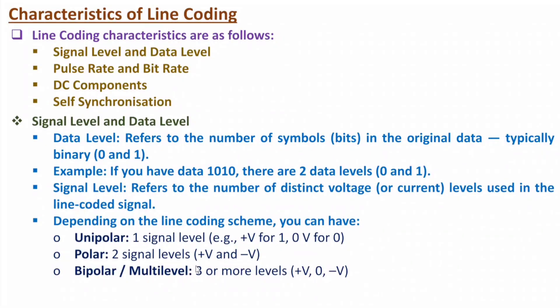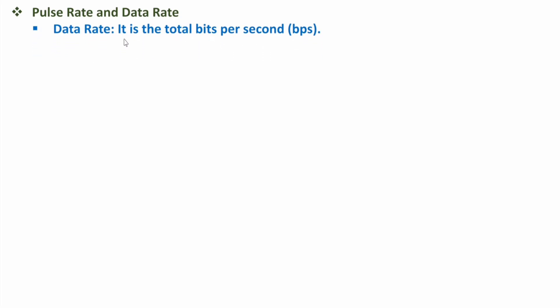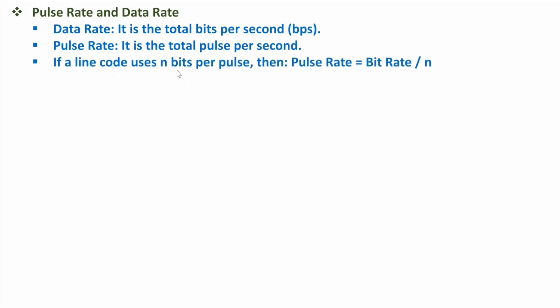The second characteristic is pulse rate and data rate. Data rate is total bits per second, and pulse rate is total pulses per second. To relate them: if you have N number of bits per pulse, then pulse rate equals bit rate divided by N. So data rate is total bits per second and pulse rate is total pulses per second, with pulse rate = bit rate / N.